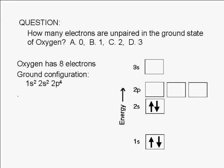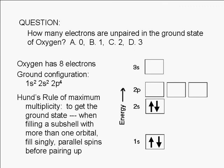To get one of the most stable ways, we can use Hund's rule of maximum multiplicity. Hund's rule says that to get to the ground state, the most stable state, when filling a subshell with more than one orbital, we fill the orbitals singly first, with electrons of parallel spin before we pair up electrons.